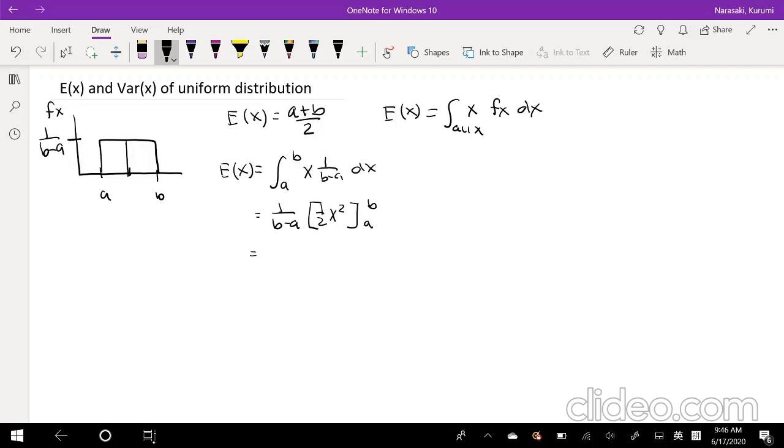And I'm actually going to take that 2 out as well because I don't really like everything kind of cluttered. And then I'm going to plug in b as my upper limit, that's b squared, and then a as my lower limit, a squared. So this can actually be simplified to b minus a, b plus a.